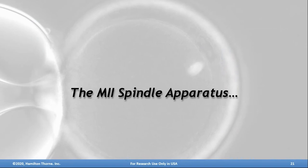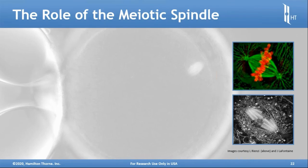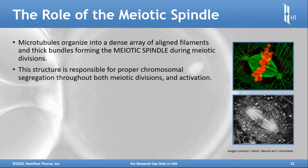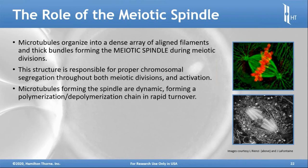People have taken oocytes and used dyes that bind to the microtubules and DNA at the metaphase plate, creating elegant images showing spindles formed during meiotic divisions. This structure is responsible for proper chromosomal segregation during meiotic divisions and during oocyte activation when paternal and maternal chromosomes are blended to create the embryo. The microtubules forming the spindle are dynamic.